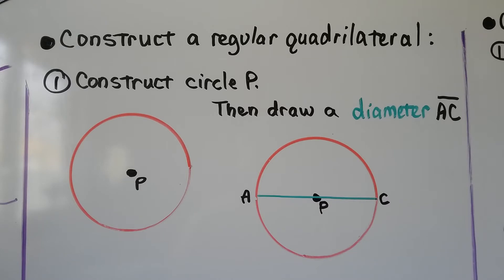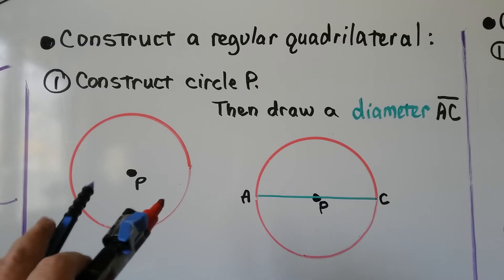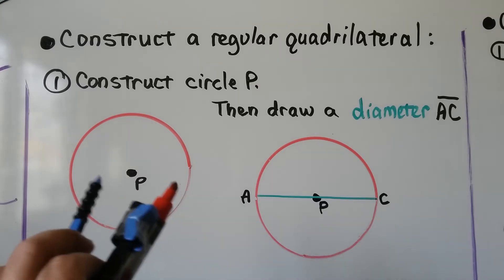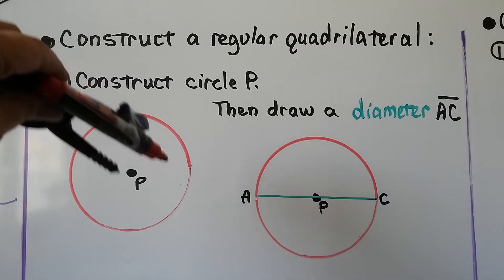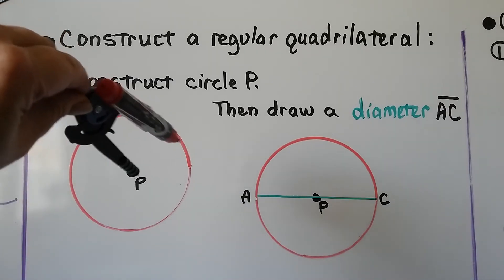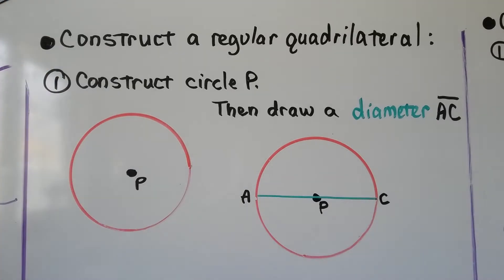We can construct a regular quadrilateral. First, construct a circle and label it P. You can label it anything you want, but we're going to have many more labels coming, so P is far from the beginning of the alphabet, which might help. Then draw diameter AC through P.